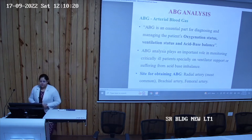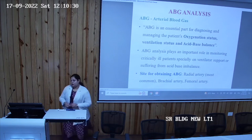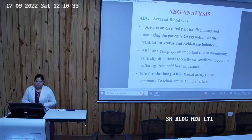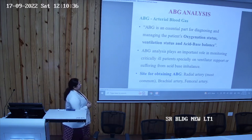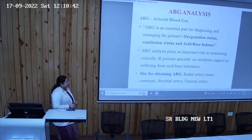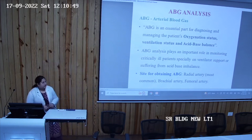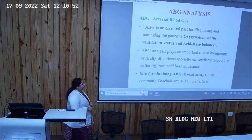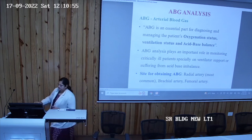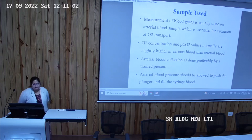ABG plays an important role in monitoring critically ill patients that are on ventilation and suffering from acid-base imbalance. For the ABG sample, we generally take an arterial sample. The most important and most common site for ABG analysis is the radial artery. The second site is the brachial artery, or we can take it from the femoral artery. The measurement of blood gas is usually done on an arterial blood sample, which is essential for oxygen transport.